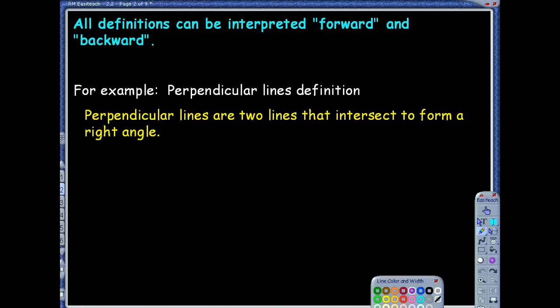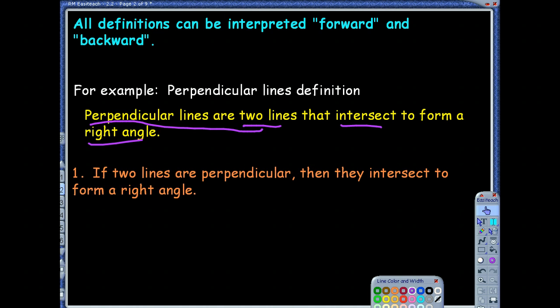All right, when we're talking about definitions, and we threw in a couple definitions to be able to talk about them today, but when we talk about definitions, what we need to be aware of is that they can be interpreted forward and backward. So, for example, we've got our perpendicular line definition. It said, perpendicular lines are two lines that intersect to form a right angle. So, I can interpret that forward and backward. I could write that a couple of different ways. If I wanted to make a conditional statement out of this, which means you have to throw in the words if and then, right? Do you think you can do that?